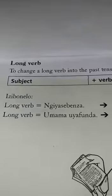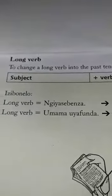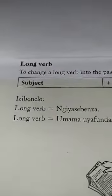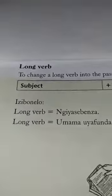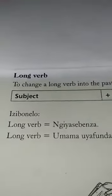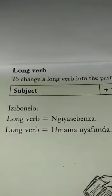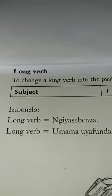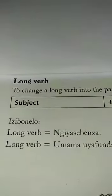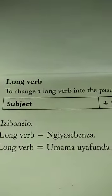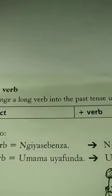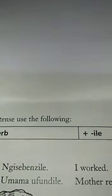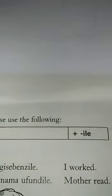In the long form, you must remember that there is no object in the sentence, and therefore even in the present tense we use the long form with the YA. In the past tense, the YA falls away and the verb ends now with I-L-E.